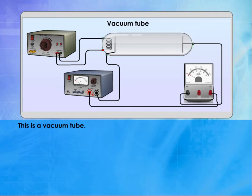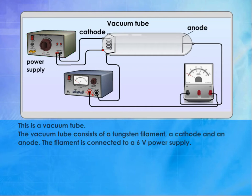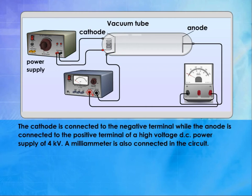This is a vacuum tube. The vacuum tube consists of a tungsten filament, a cathode, and an anode. The filament is connected to a 6-volt power supply. The cathode is connected to the negative terminal, while the anode is connected to the positive terminal of a high voltage DC power supply of 4 kilovolts. A milliammeter is also connected in the circuit.